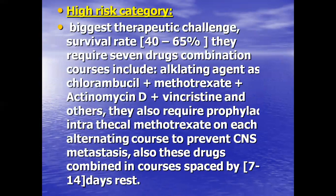The high risk category represents the biggest therapeutic challenge, with survivor rates of only 40–65%. It requires a seven-drug combination. Courses include alkylating agents such as chlorambucil, methotrexate, actinomycin D, vincristine, and others. They also require prophylactic intrathecal methotrexate on each alternating course to prevent CNS metastasis.